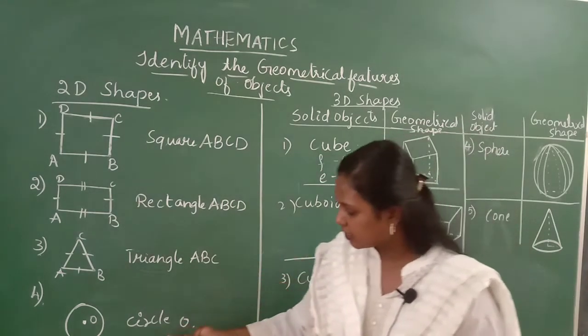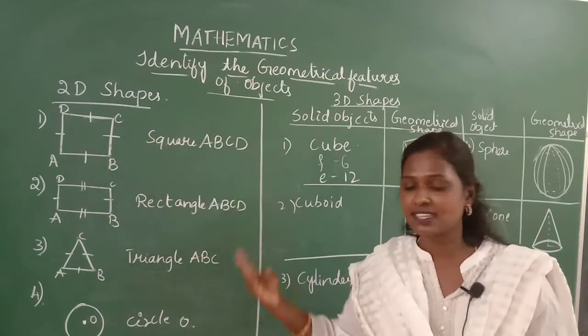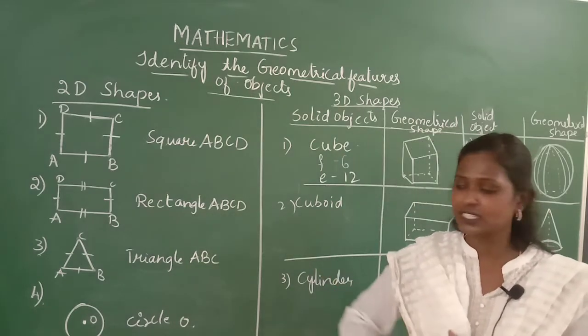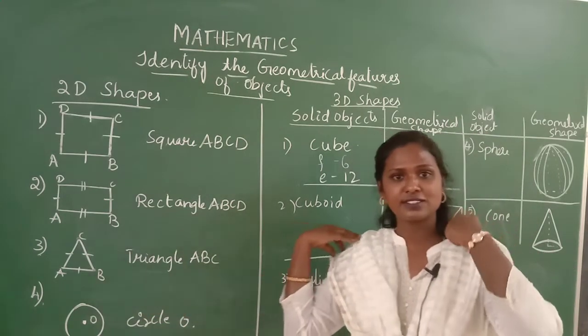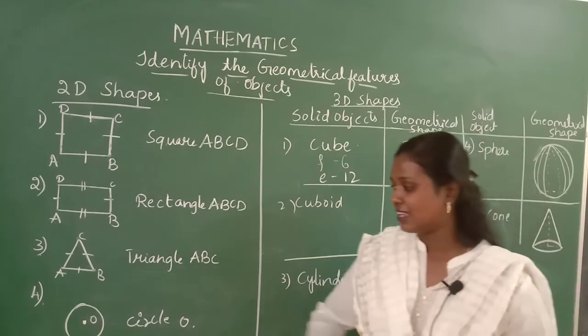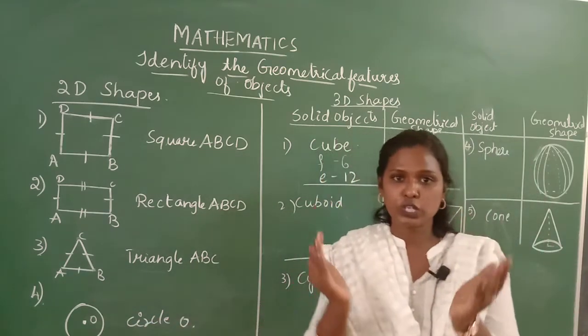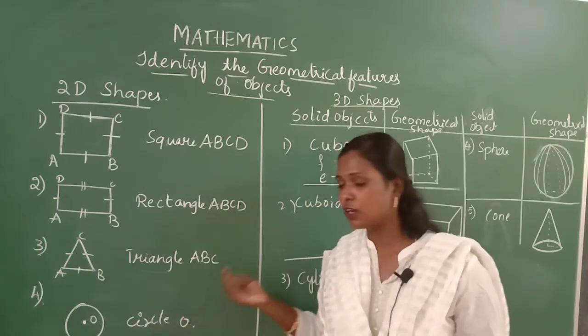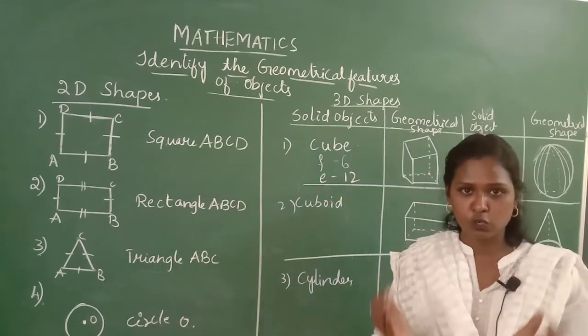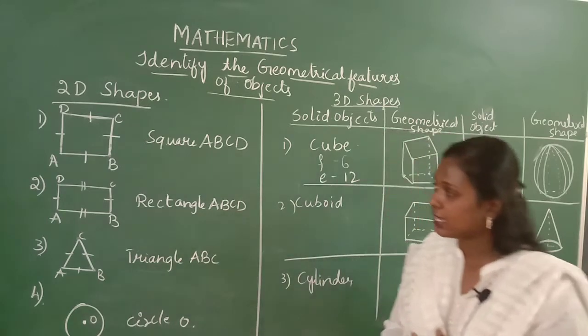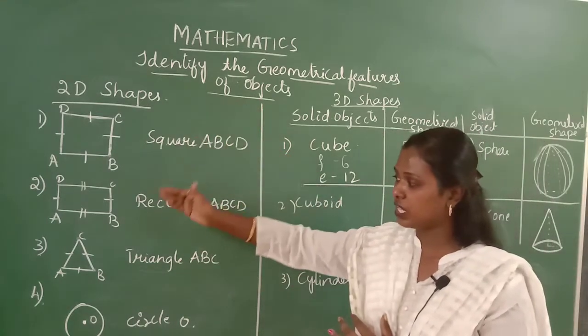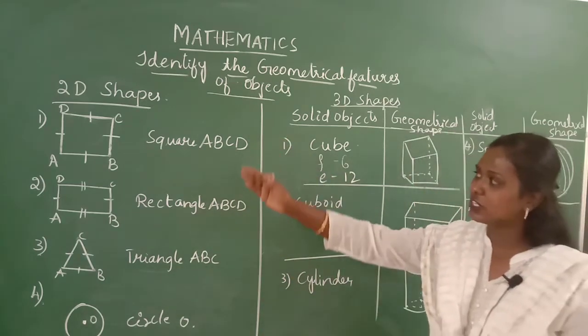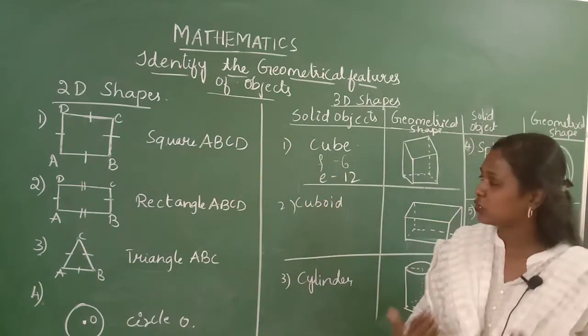Let us see the last example of 2D shapes, the circle. Circle does not have any corners. Can you see any corners in the circle children? No. Circle is a closed loop. We call the circle as circle O. It is a closed loop. It has a curved shape. Have you understood 2D shapes?